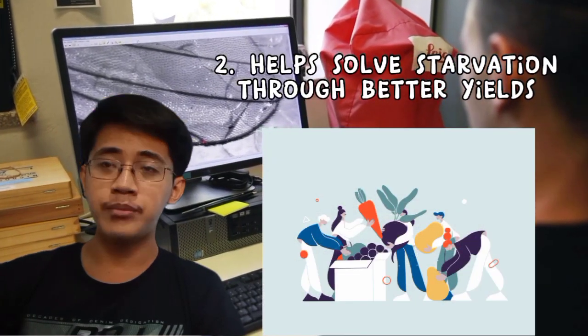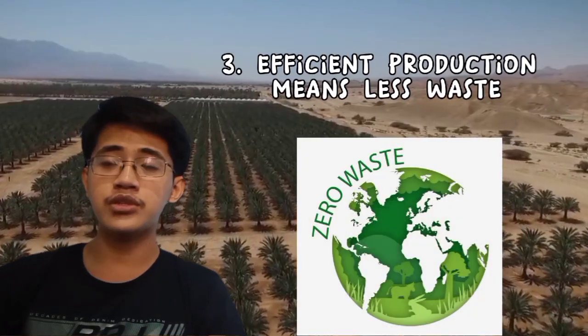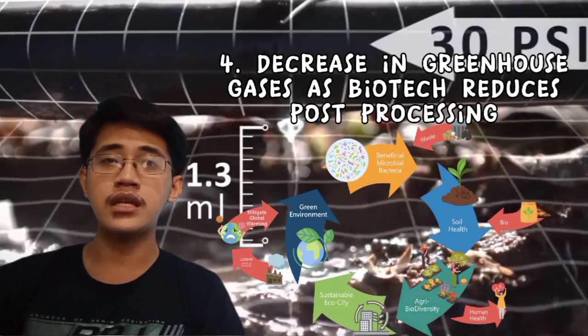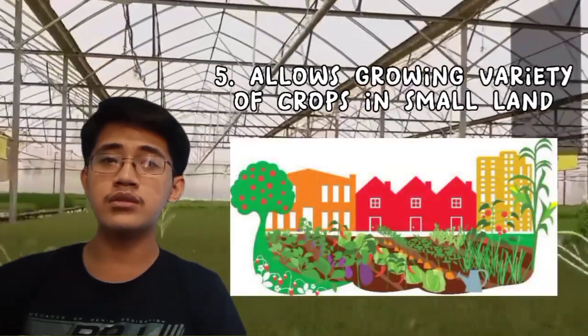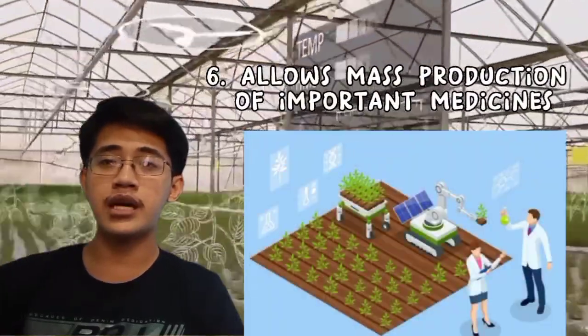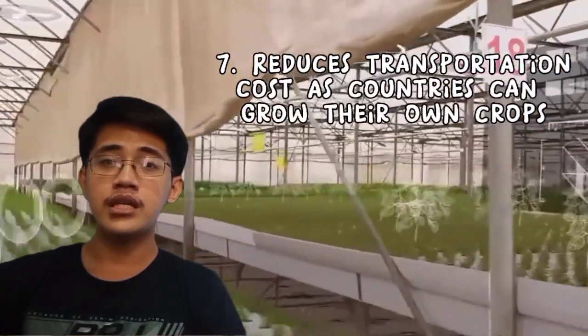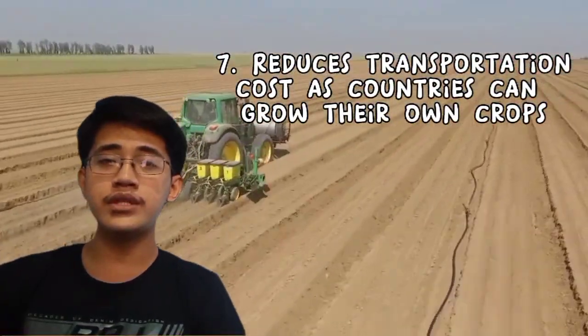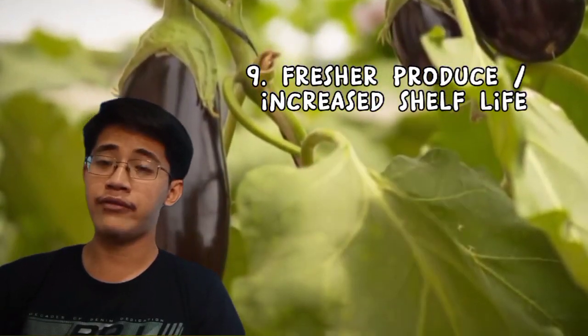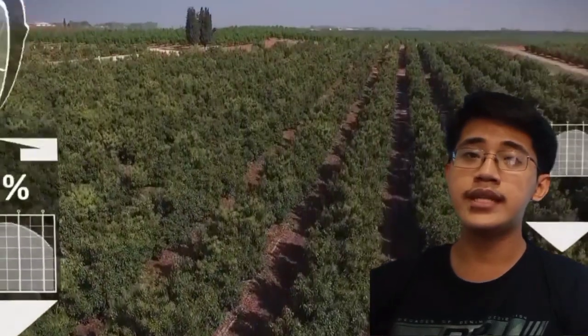Number two: help solve starvation through better yields. Number three: efficient production means less waste. Number four: decrease in greenhouse gases as biotech reduces post-processing. Number five: allows growing a variety of crops in a small land or small area. Number six: allows mass production of important medicines. Number seven: reduces transportation costs as countries can grow their own crops. Number eight: increased nutritional value of foods. Number nine: produce and increase healthy life. Number ten: improvements in developing countries.